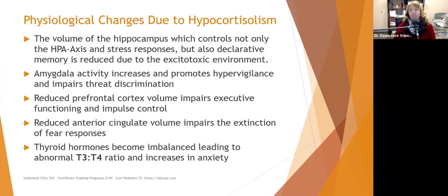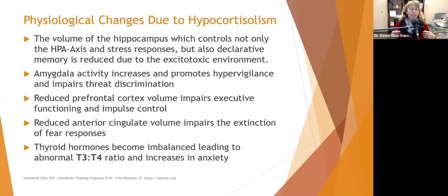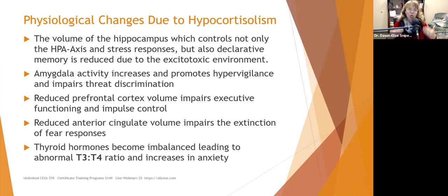Reduced anterior cingulate volume impairs the extinction of fear responses, so we lose the ability to take things off the high-alert list. Chronic stress and trauma cause notable reductions in the hippocampus, prefrontal cortex, and anterior cingulate — actual measurable shrinkage, not just cognitive changes. Additionally, thyroid hormones become imbalanced, leading to abnormal T3 and T4 ratios, which increase anxiety. Hypothyroid looks like depression; hyperthyroid can look like anxiety or hypomania.